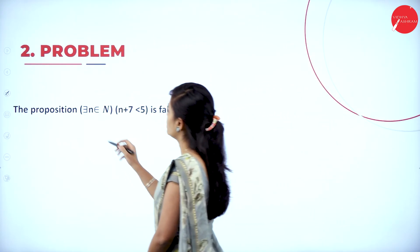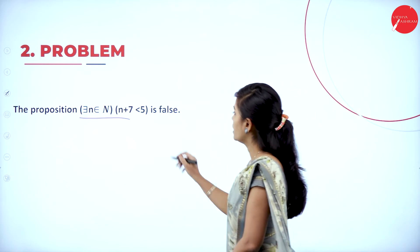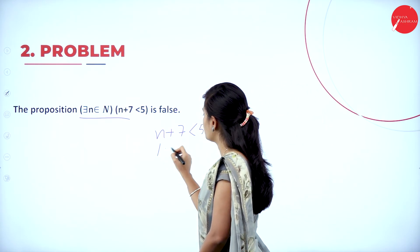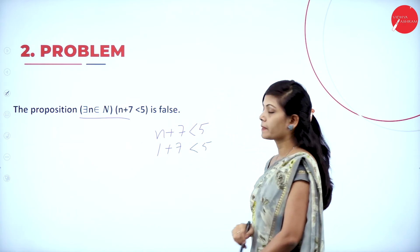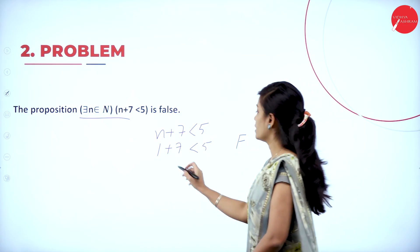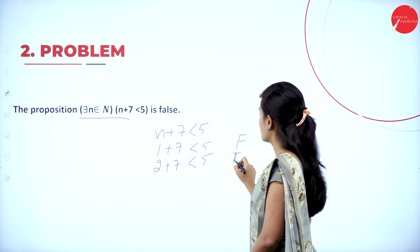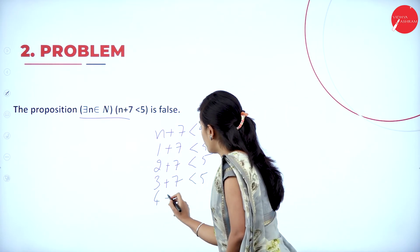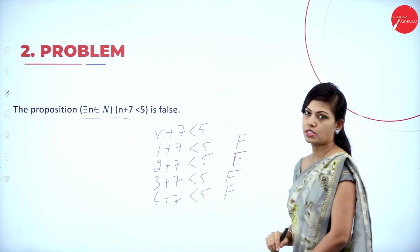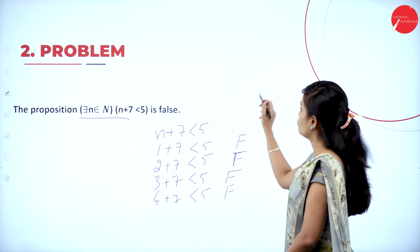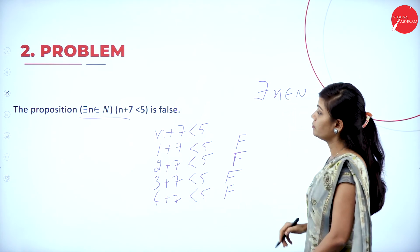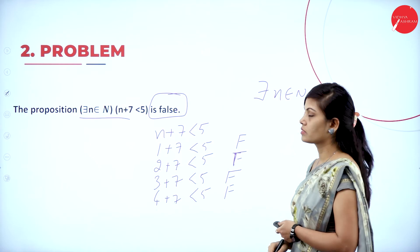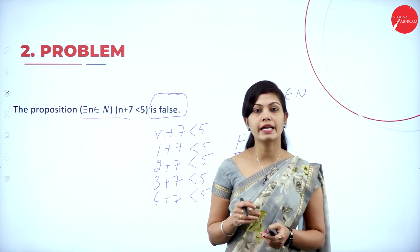Next: the proposition — there exists n belonging to N such that n+7 < 5 is false. Put n=1: 1+7 < 5 is false. n=2: 2+7 < 5 is false. n=3: 3+7 < 5 is false. So for all values of n, n+7 < 5 is false only. This is also an existential quantifier example. In quantifiers we have two types: universal quantifier and existential quantifier.